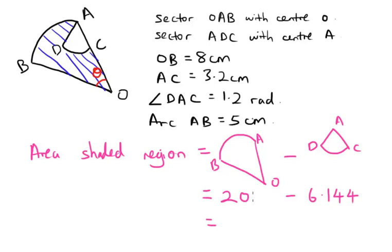We have found the two important information here, so you just have to do the subtraction and you will get the area for the shaded region. If you want to know how we get the area for AOB and ADC, you can refer back to the previous videos.